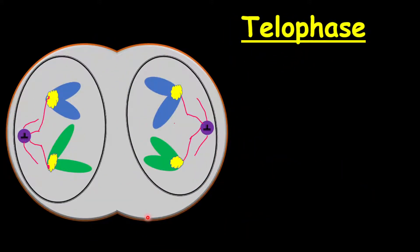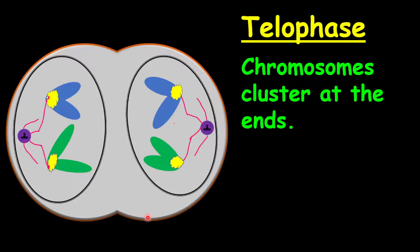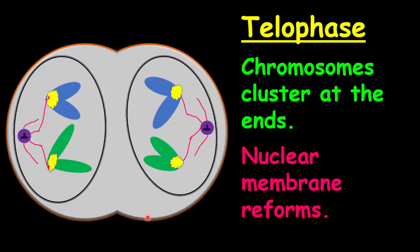The telophase, which is the final phase of the mitotic phase. Here you have the chromosomes clustered at the ends of the cell. Also, the nuclear membranes will form, forming two separate nuclei in the same cell. For animal cells, a cleavage furrow will form.